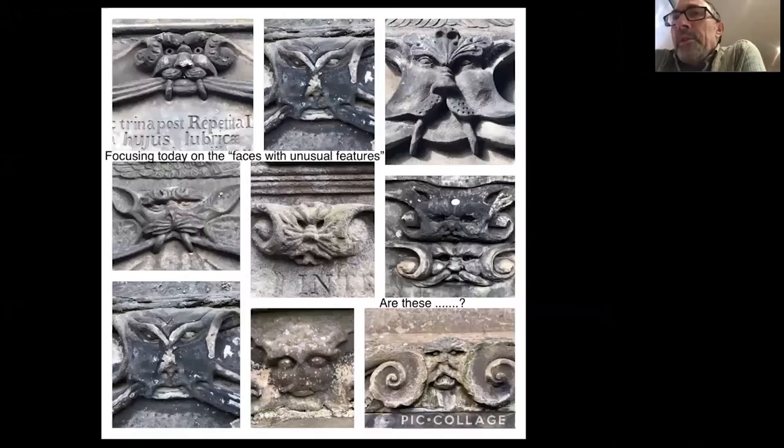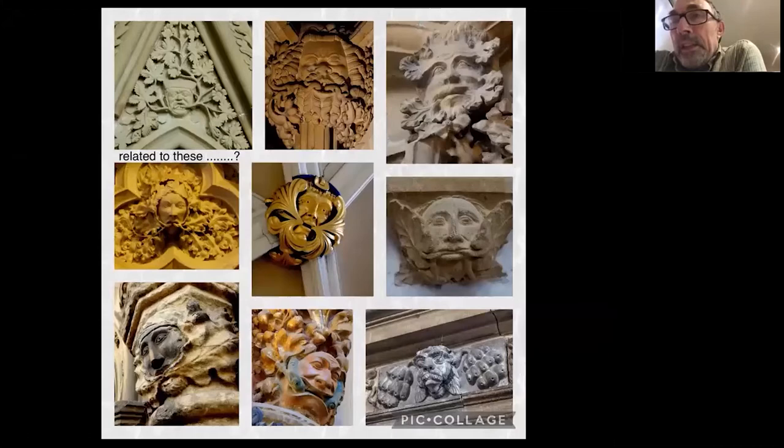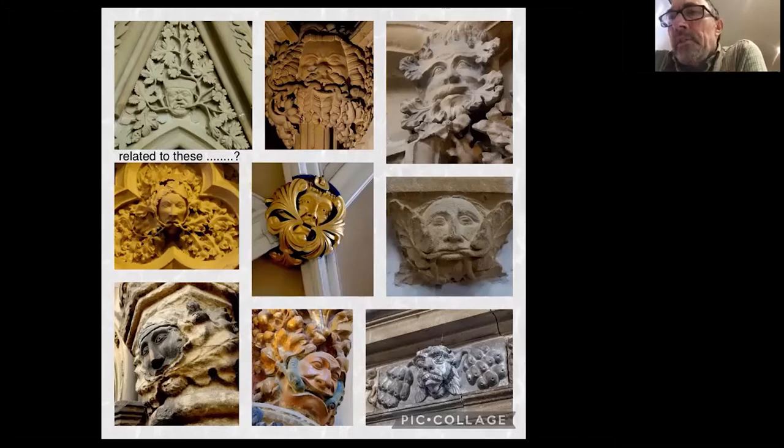We're focusing on the faces with unusual features. Fundamentally, we're asking whether they are related to your classic foliate faces - foliate heads that are quite common in medieval churches, either on the outside of the building or inside. They're particularly enigmatic, particularly evocative images that were prevalent in the medieval period between about the 11th and 15th centuries. So we're just asking whether there could be some sort of relationship between the two.